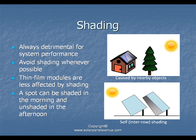The third critical factor is shading. Shading is always detrimental to system performance and should be avoided whenever possible. Notably, thin film modules are less affected by shading than other types. A site can be shaded in the morning but unshaded in the afternoon, or unshaded in summer but shaded in winter when the sun is low in the sky and objects cast longer shadows.